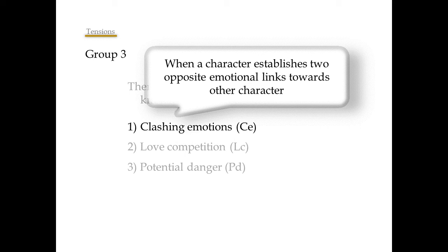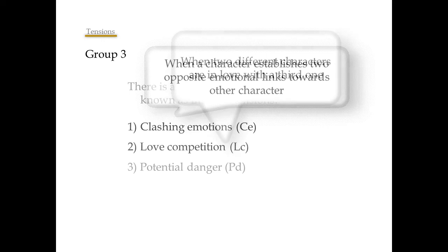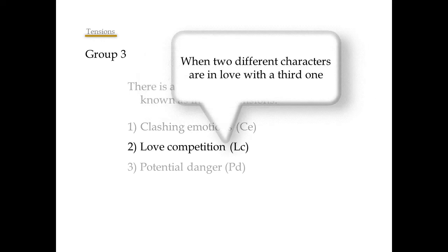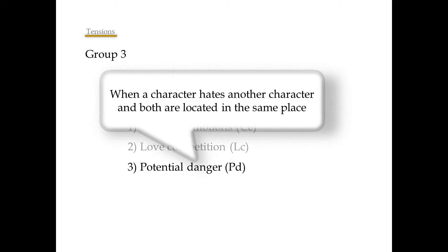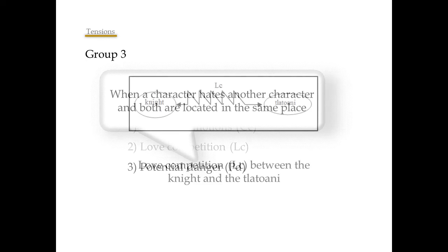Love competition is triggered when two different characters are in love with a third one. And potential danger is triggered when a character hates another character and both are located in the same place.